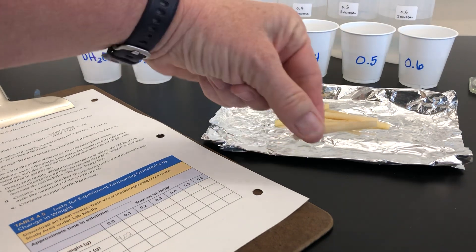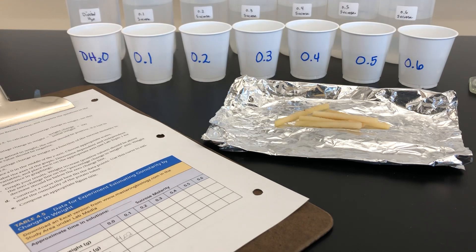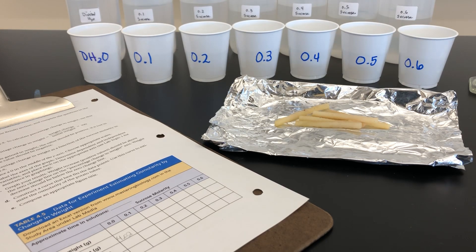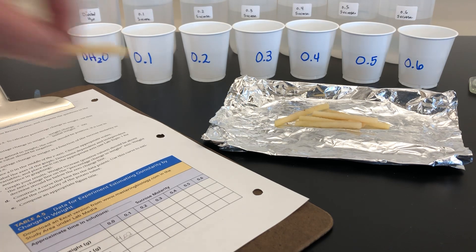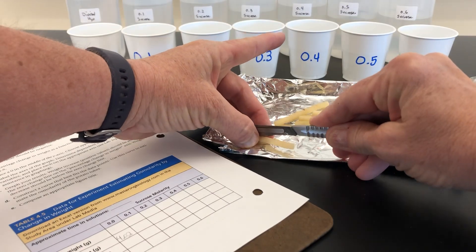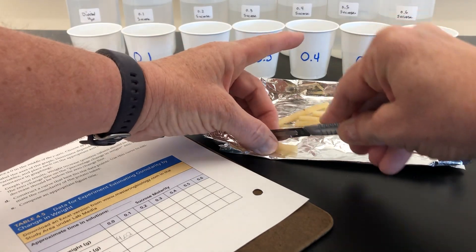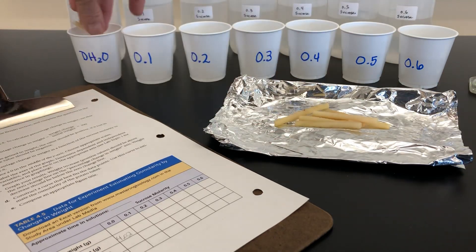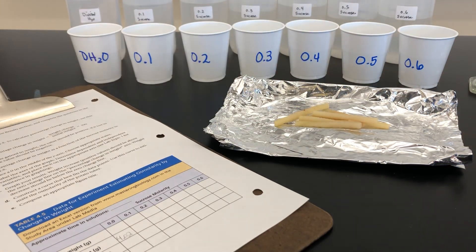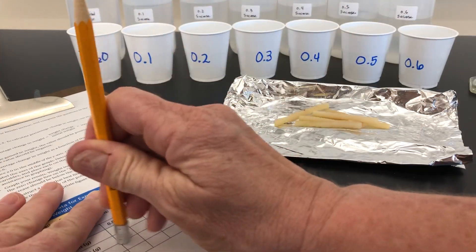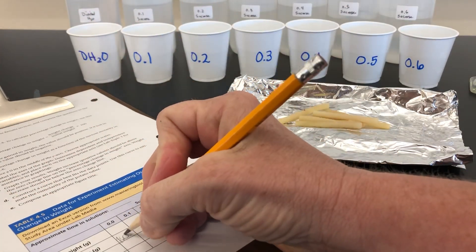The first cylinder weighs 1.01. We'll cut it in half and place both pieces into the distilled water. Make sure you've recorded this in your data table.